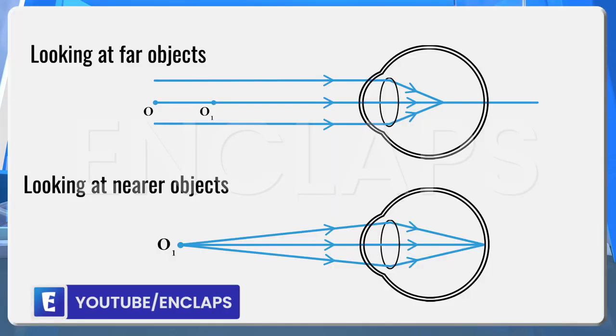If we analyze the ray diagram, we can see that the images of nearby objects are forming on the retina, but the images of distant objects are forming in front of the retina. That's the reason why distant objects cannot be seen clearly.